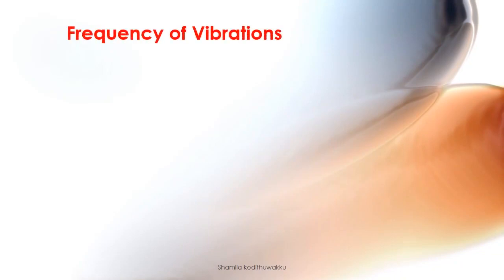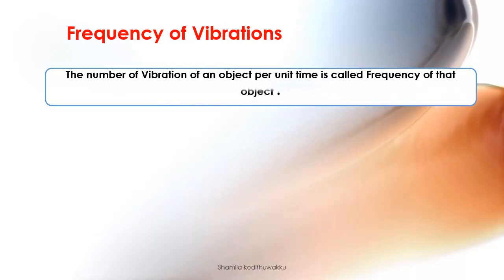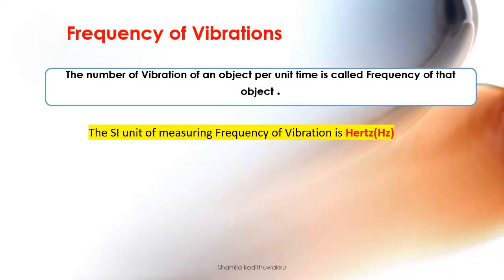The number of vibrations of an object per unit time is called the frequency of that object. The unit of measuring frequency of vibration is Hertz, abbreviated as Hz.